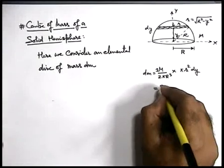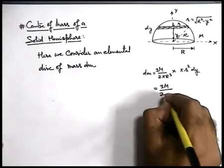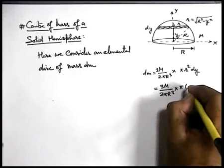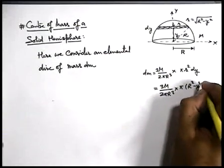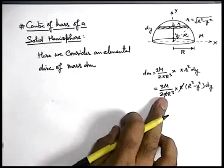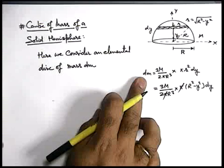So this can be written as three M by two pi R cubed into pi r squared. r squared can be written as R squared minus Y squared into dY. Here pi gets cancelled out and this will be the elemental mass dM.